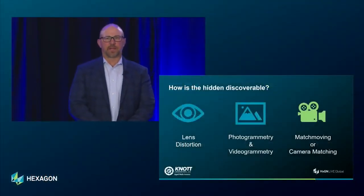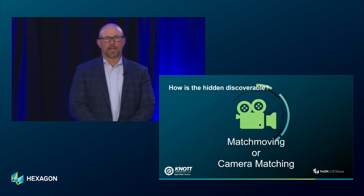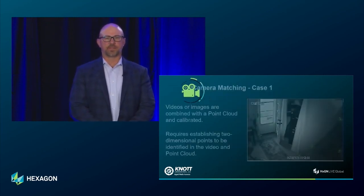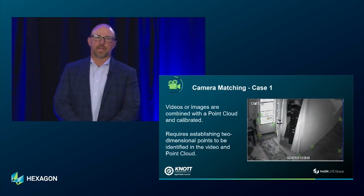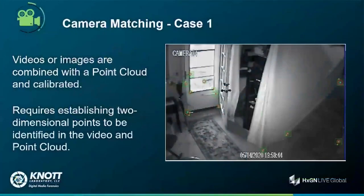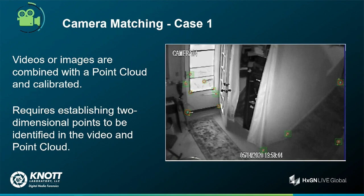Let's move into match moving and camera matching, and how the hidden becomes discoverable. Camera matching is establishing two-dimensional points that can be seen in a video — which is just a framework of multiple single-camera pictures linked together — that are identifiable in both the video and the point cloud. This is the process of going through and doing exactly that.